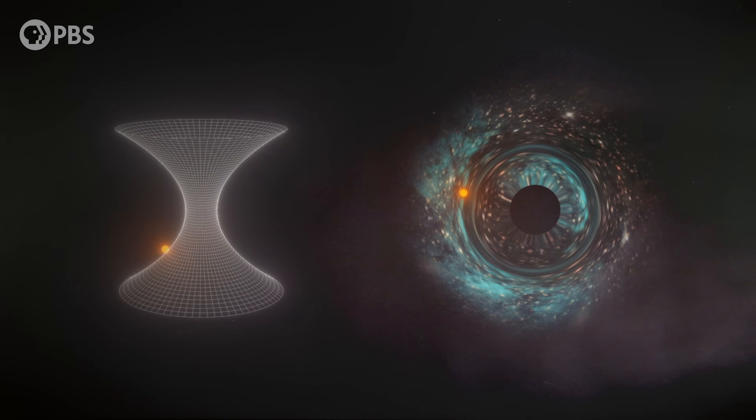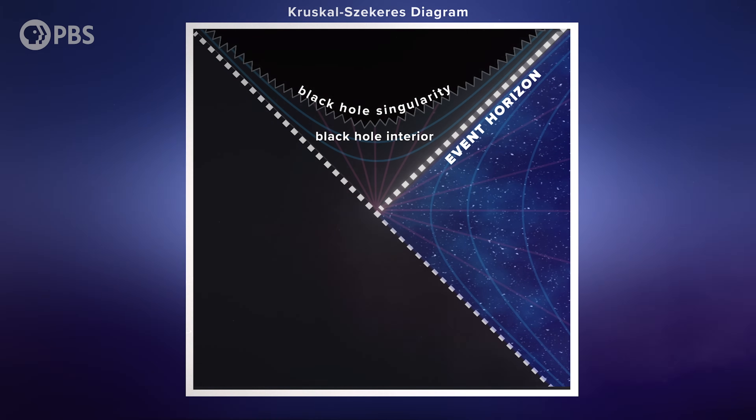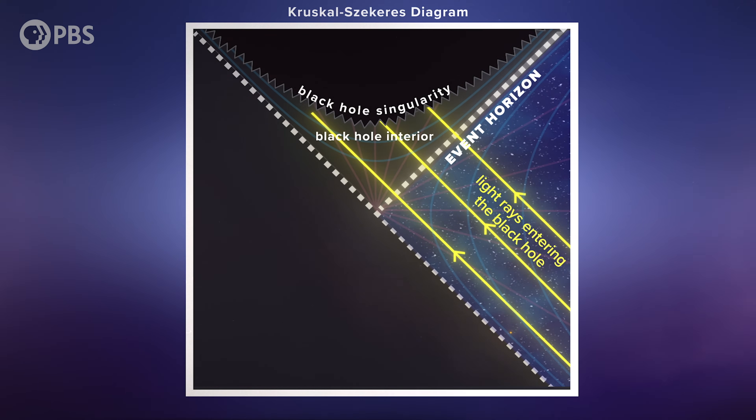But if we unfreeze the wormhole – if we add back the dimension of time – that journey becomes impossible. Fuller and Wheeler proved that the Schwarzschild wormhole collapses on itself so fast that nothing, not even light, can make it through. To understand this, we turn to the Kruskal-Szekeres diagram. Moving up means moving into the future, and moving left means moving towards the black hole, but space and time coordinates are blended so that time doesn't freeze at the event horizon, which itself becomes a 45-degree path.